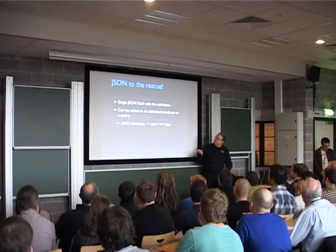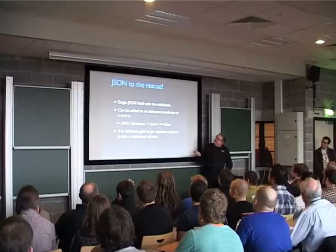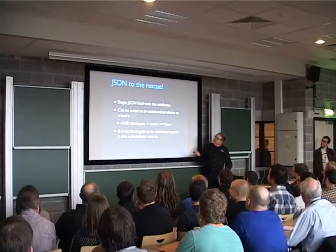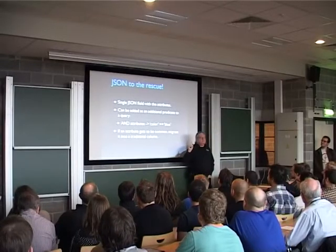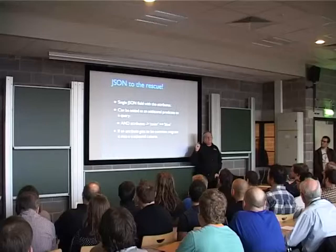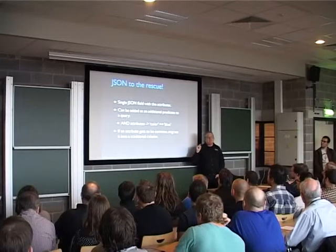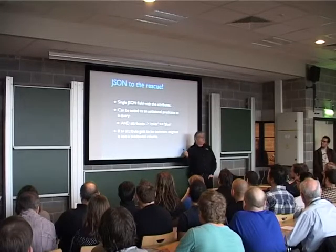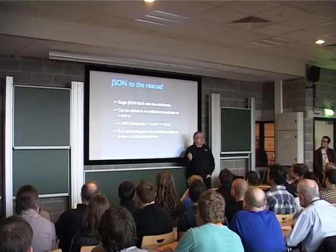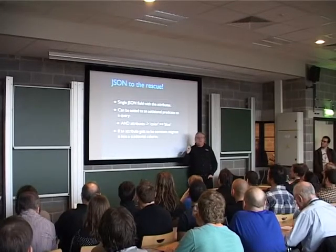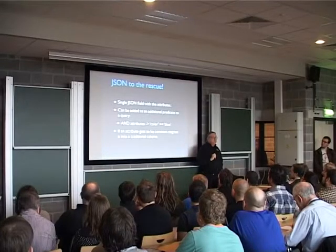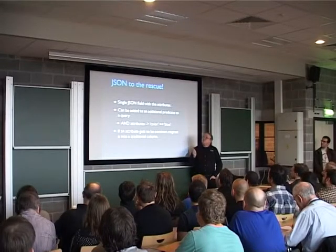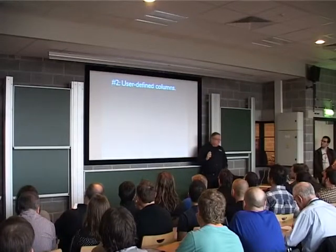Something to keep in mind: if this gets to be really common — say 25% of the things in the catalog have a color — you might want to migrate it into a traditional nullable column. But storing infrequent or variable attributes in a JSON field is one very nice use of JSON.